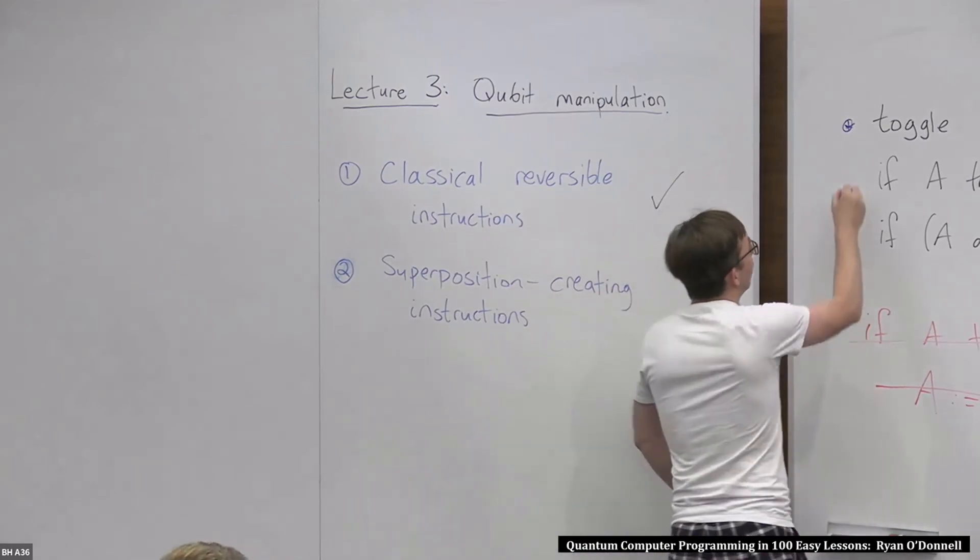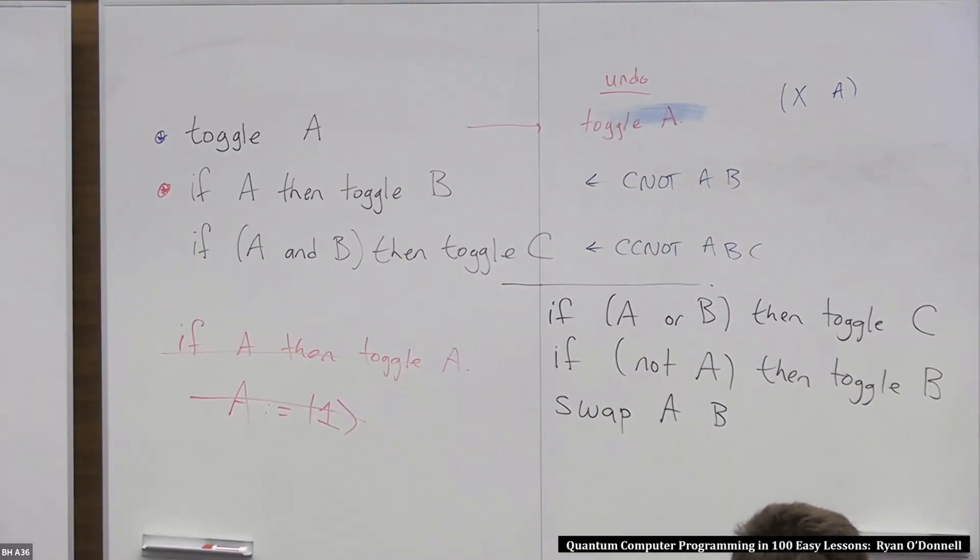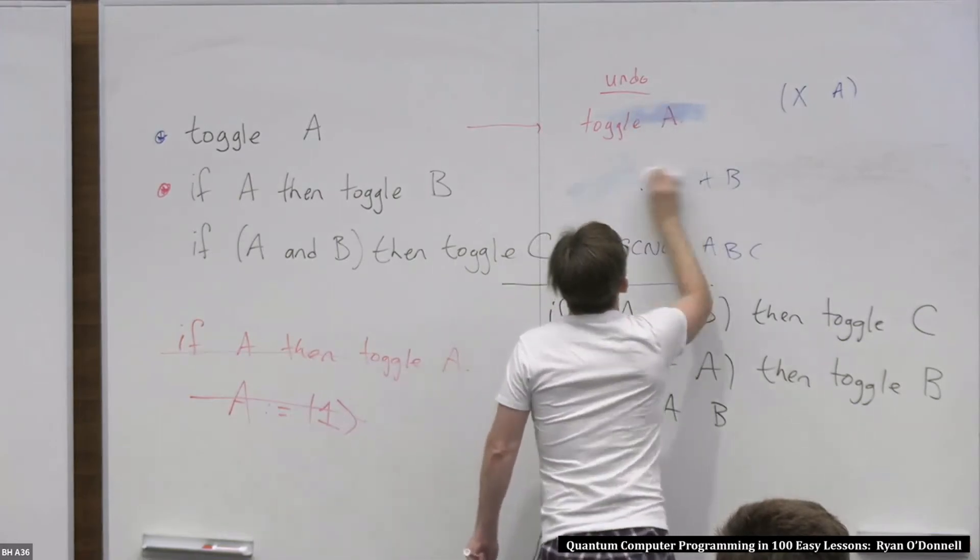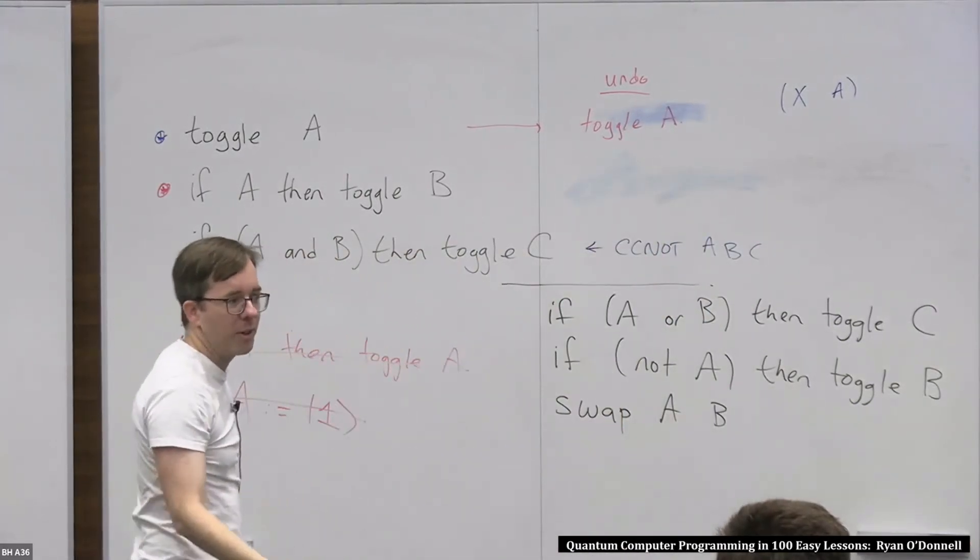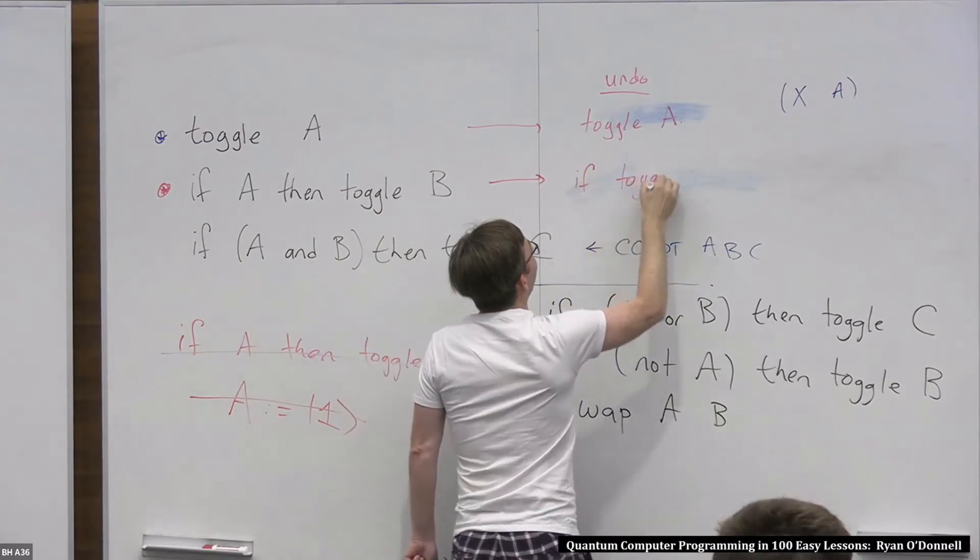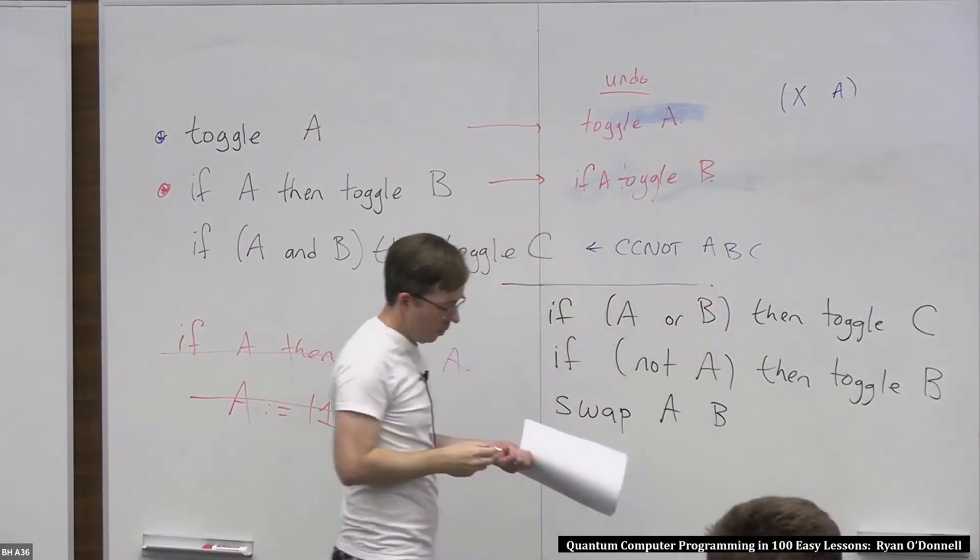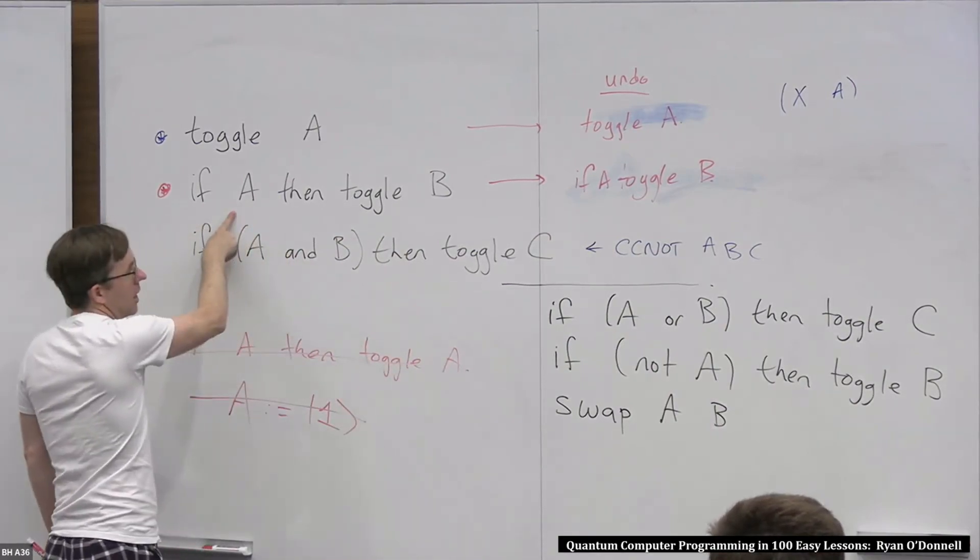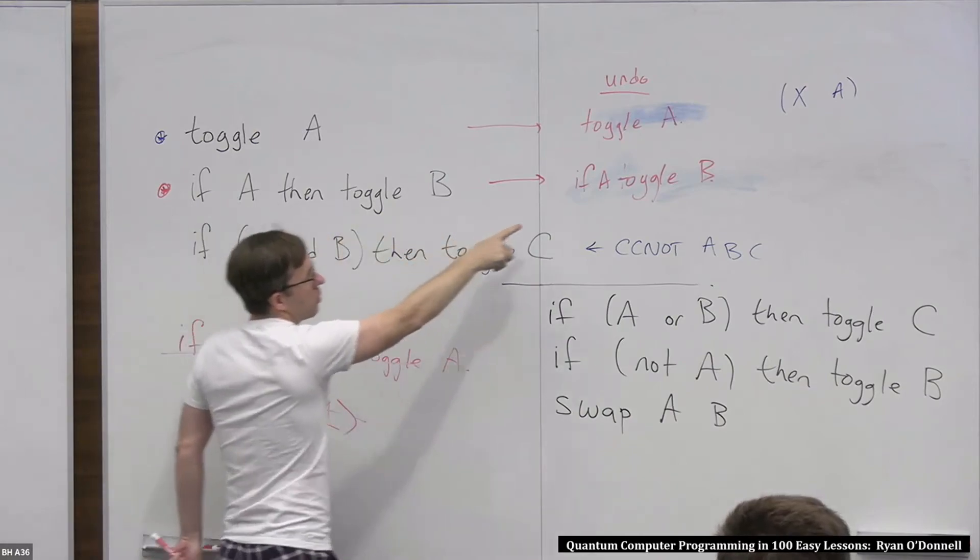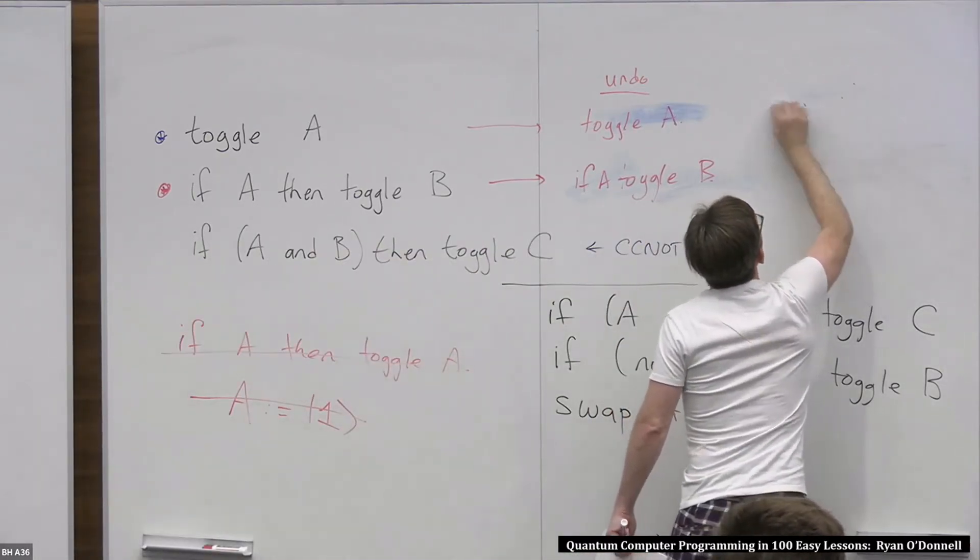And what about this one? If A then toggle B, what's an instruction you can do that will exactly undo that? Yeah, it's kind of funny actually. If A then toggle B is the way to undo this one. This one also exactly undoes this one. It's sort of funny, but neither of these instructions—well, this instruction doesn't change A's value. So A's value never changes here. And then B might get toggled if A is true. So if B does get toggled if A is true, then this will toggle it right back. And if A was false, so B didn't get toggled, this will also not do anything.